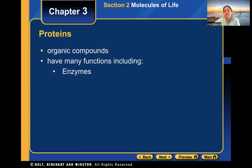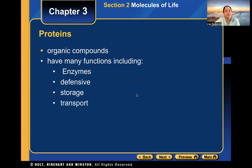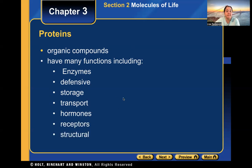The functions of proteins include: they can be enzymes, which we'll cover shortly; they can have defensive qualities, like antibodies in your body that fight off diseases and viruses. They serve storage roles — egg whites store nutrients for the egg. They can be transport molecules, and some hormones are proteins that transport through the blood. Hormones, receptors on membranes, and structural roles like muscles and movement are also functions.